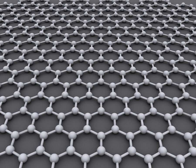Graphene is a crystalline allotrope of carbon with two-dimensional properties. Its carbon atoms are packed densely in a regular atomic scale chicken-wire hexagonal pattern. Each atom has four bonds: one sigma bond with each of its three neighbors and one pi bond that is oriented out of plane. The atoms are about 1.42 Å apart. Graphene's hexagonal lattice can be regarded as two interleaving triangular lattices.